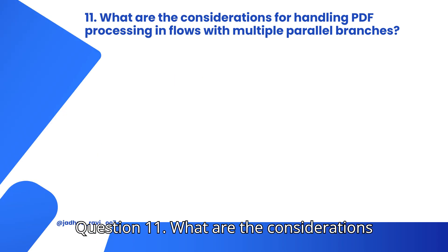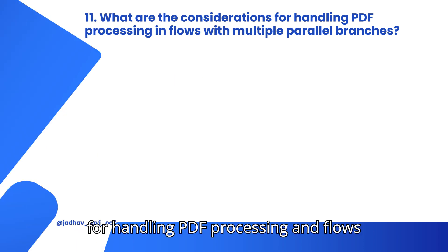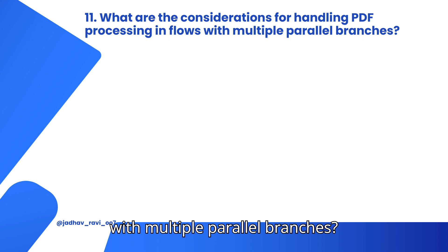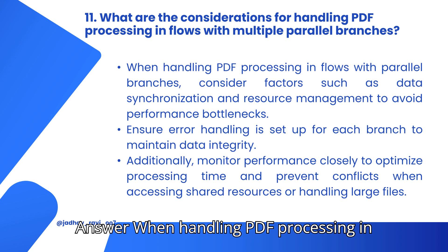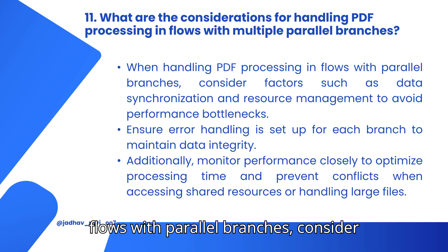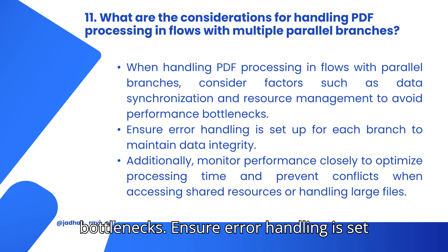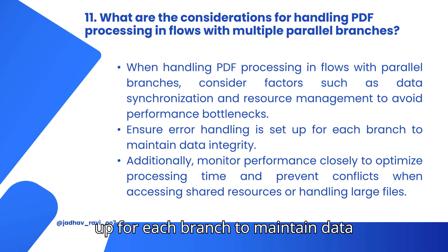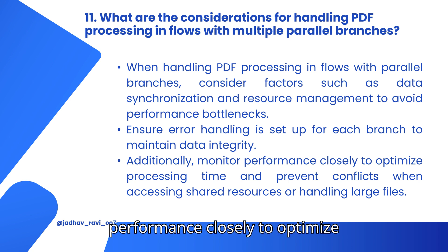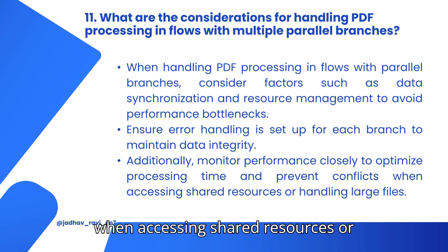Question 11: What are the considerations for handling PDF processing and flows with multiple parallel branches? When handling PDF processing and flows with parallel branches, consider factors such as data synchronization and resource management to avoid performance bottlenecks. Ensure error handling is set up for each branch to maintain data integrity. Additionally, monitor performance closely to optimize processing time and prevent conflicts when accessing shared resources or handling large files.